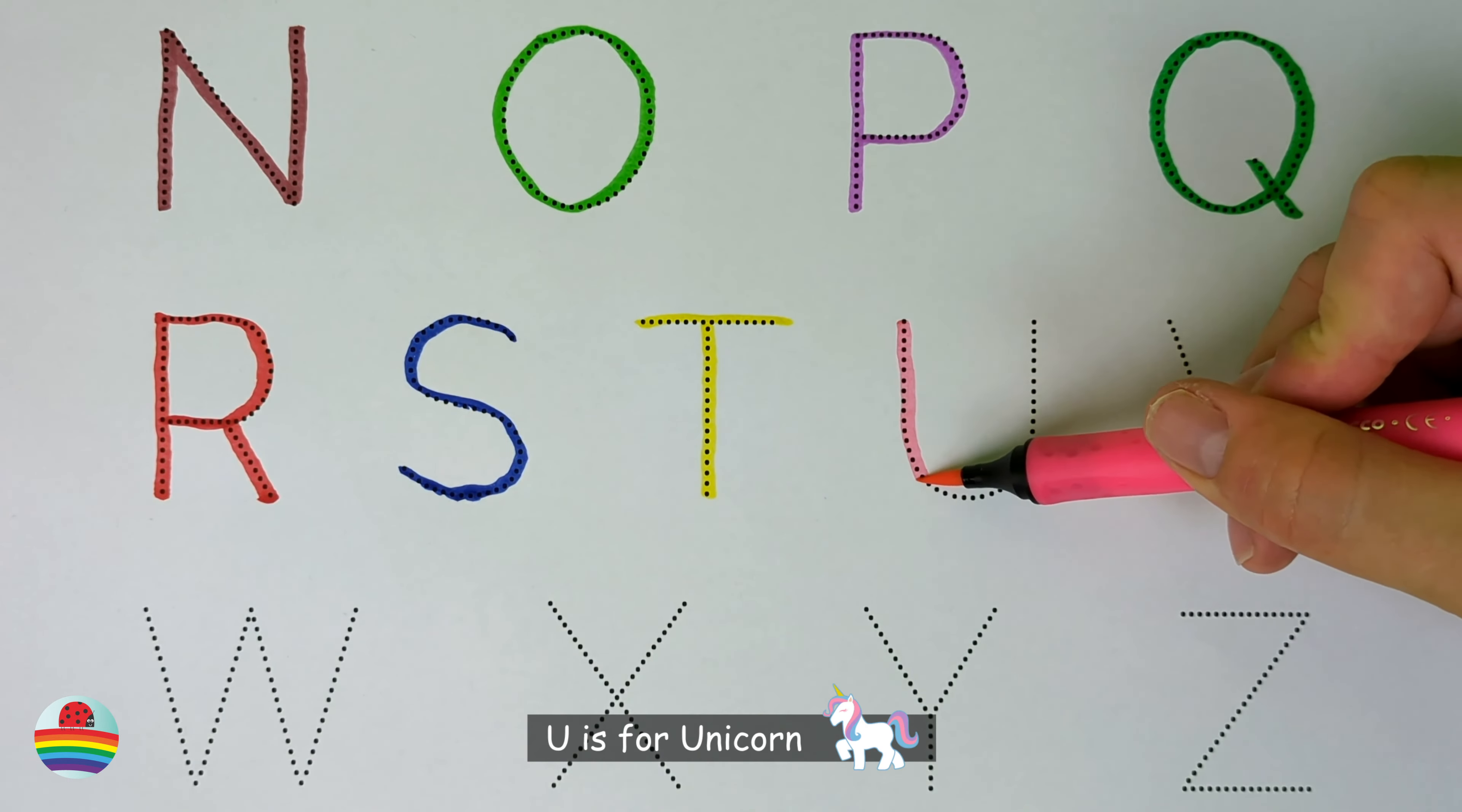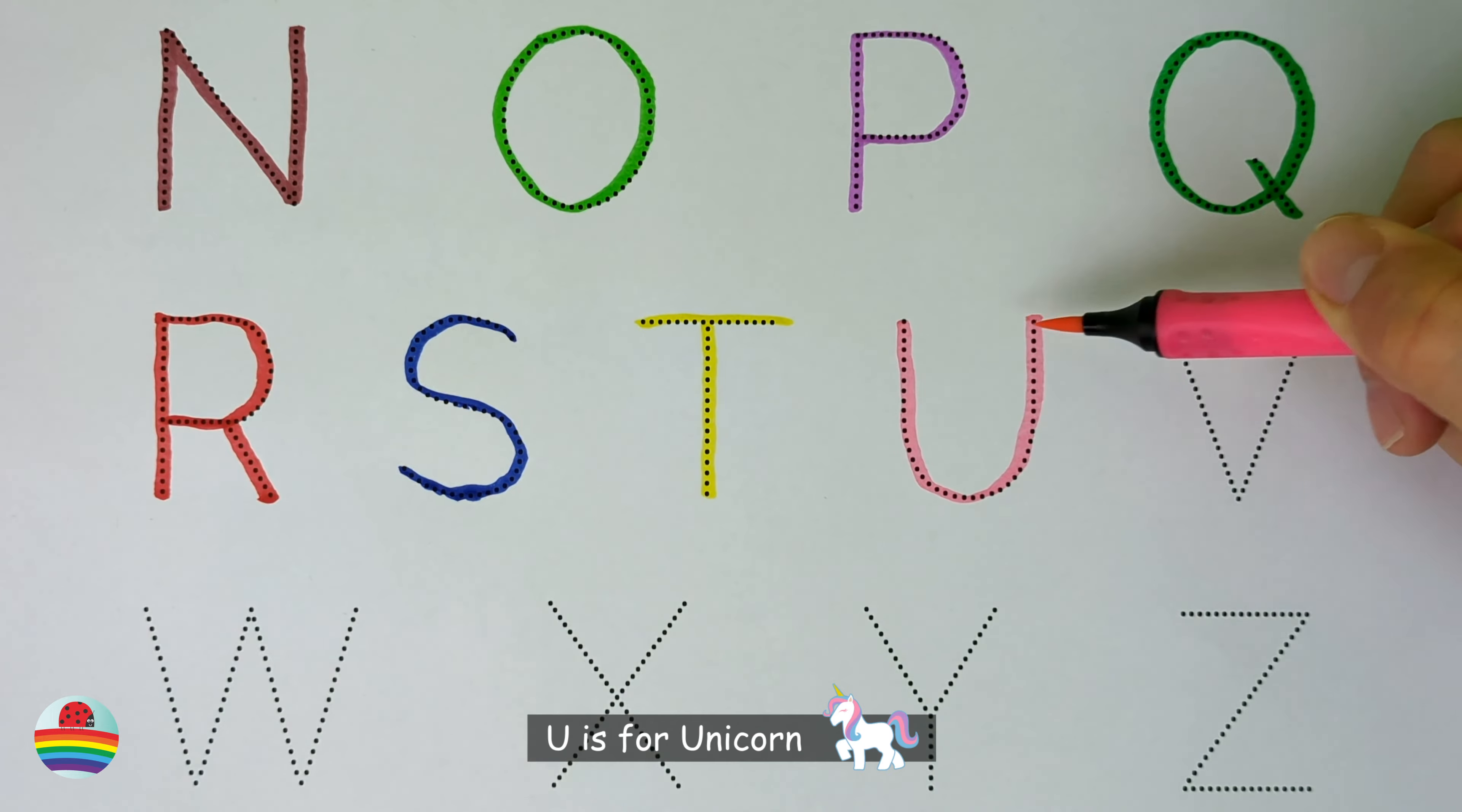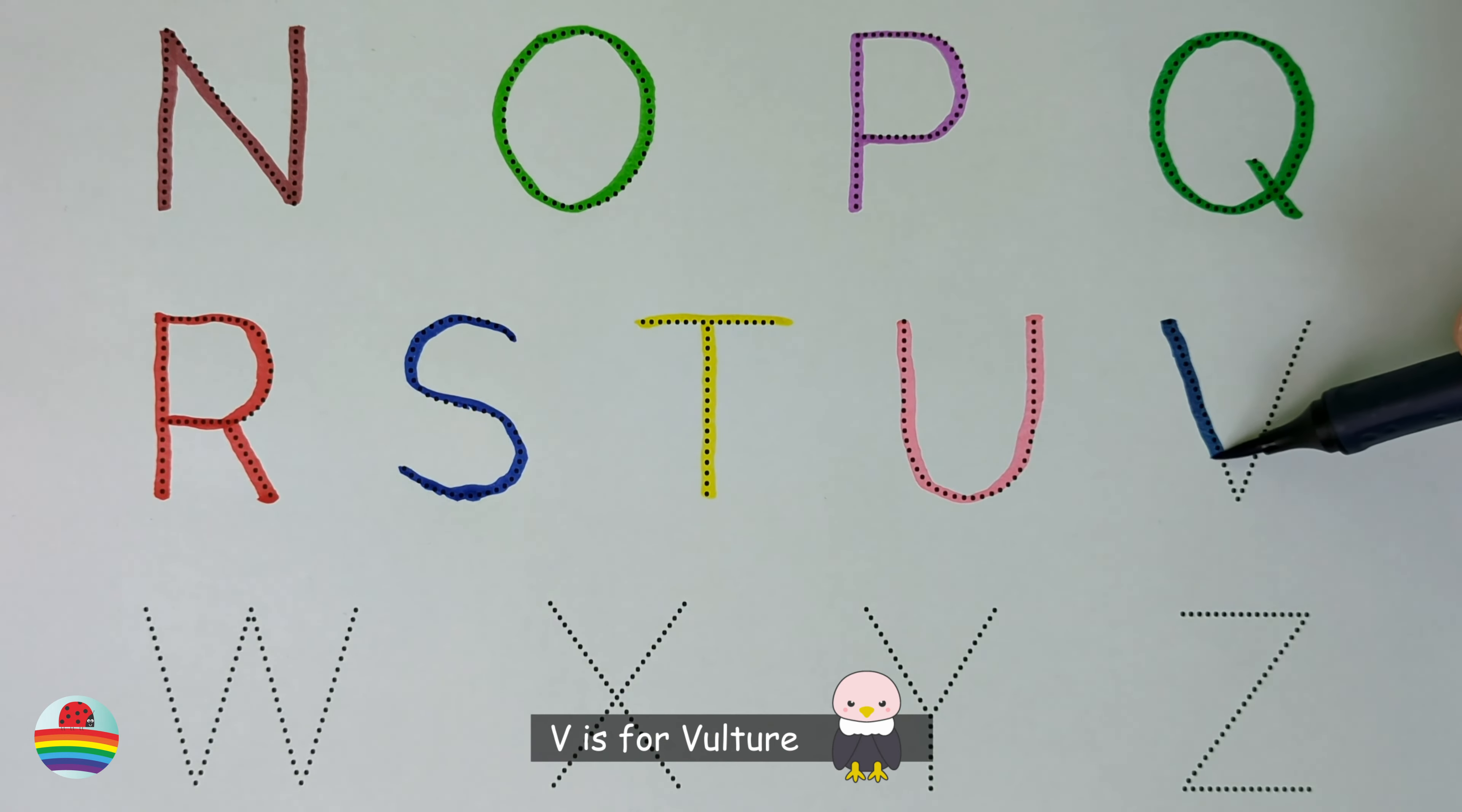U. U is for unicorn. U. V. V is for vulture. V.